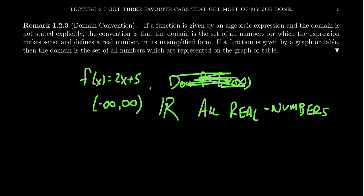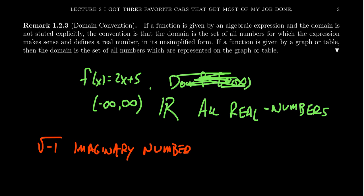We want domains to be as large as possible — the largest domain the formula allows. At this point in the course, there are only two concerns that might restrict the domain of an algebraically defined function. First, if you take the square root of any negative number, you get an imaginary number, which is not a real number. This violates the domain convention, which requires the output to be a real number.